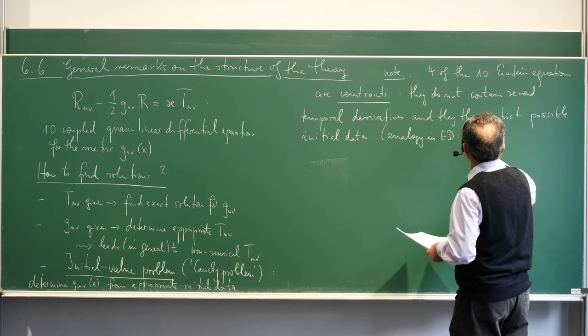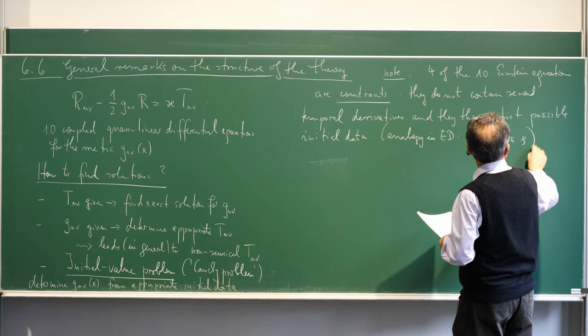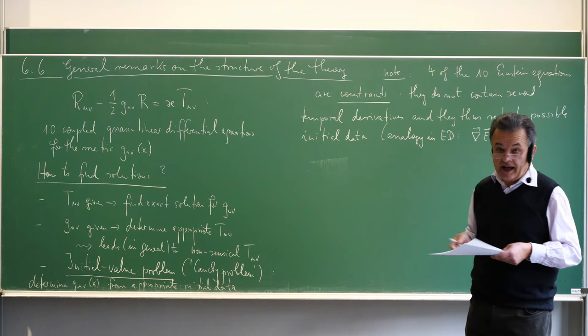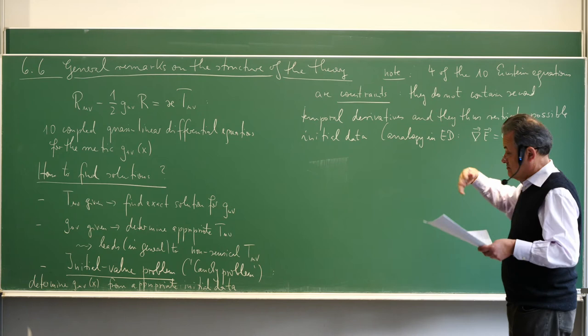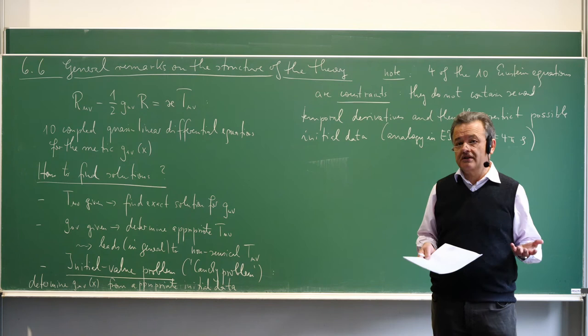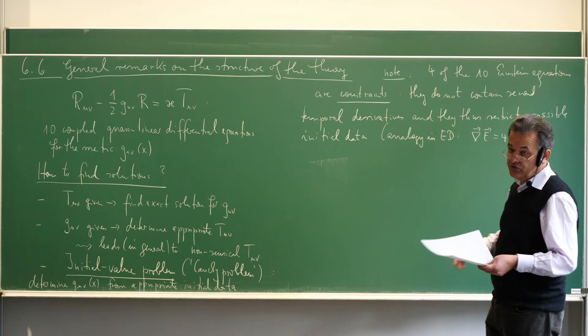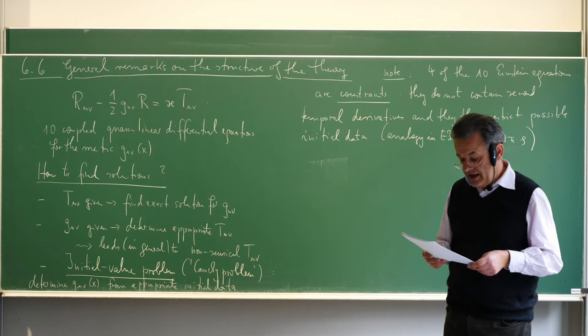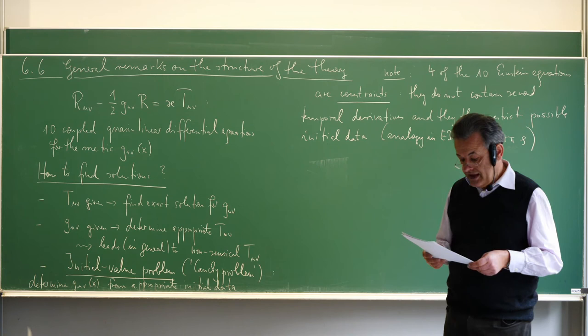The analogy in electrodynamics is Gauss's law: div E = 4 pi rho. There are no time derivatives at all here, so this is a law that must be imposed at all times. When in electrodynamics you impose initial conditions for the electric and magnetic field, you must respect Gauss's law and also the condition that the magnetic field is divergence-free, otherwise you get nonsense.